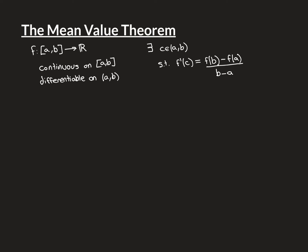The Mean Value Theorem states that if a function satisfies these criteria, we can conclude there exists a c in the open interval (a, b) such that the derivative at c equals f(b) minus f(a) divided by b minus a. If f(b) and f(a) were equal, the numerator is zero, recovering Rolle's Theorem. This is why the Mean Value Theorem is a generalisation — it handles the case where the endpoint values are not equal.